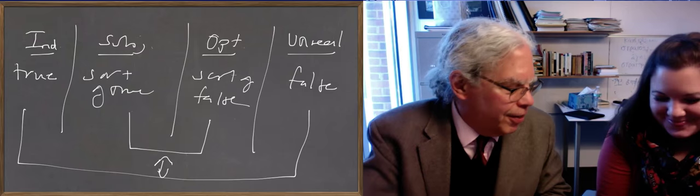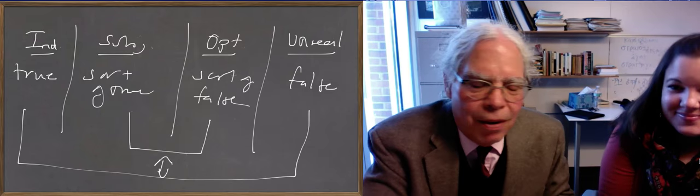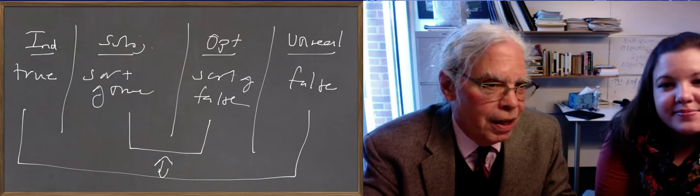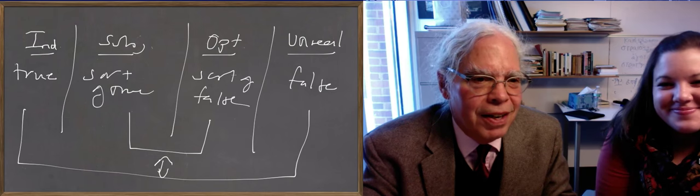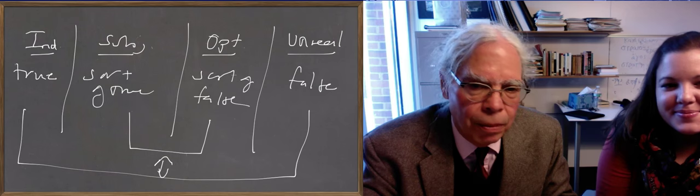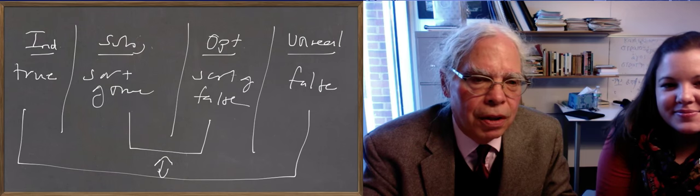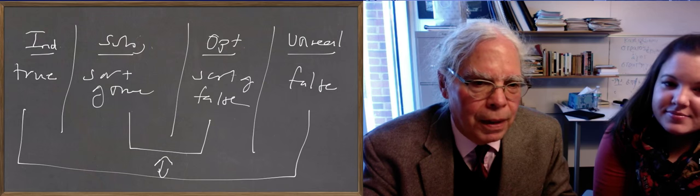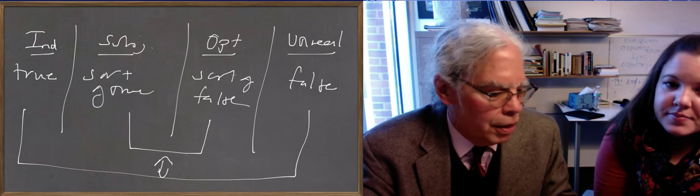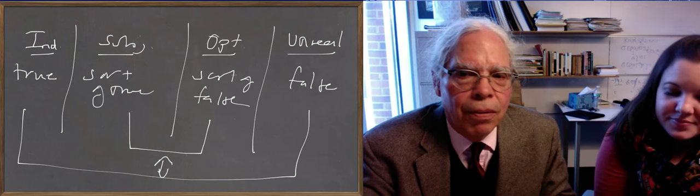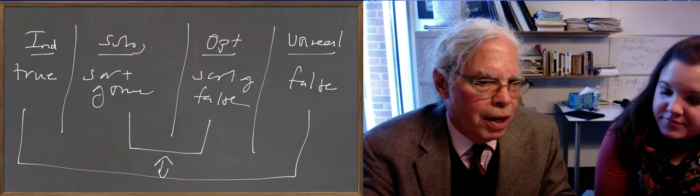An extra added video, because the other one was getting too long, on the way the moods work in Greek. And not only is it an extra added video, but you're going to have to put up with my horrible handwriting. So we've got a chart here that you see on the blackboard. What I'm trying to show in the chart is that here's the way that the moods work in Greek, and it's a system. When you just look at an element in a system, you don't know what it's doing, so if you see something about the whole, you can maybe get a better grasp on it.